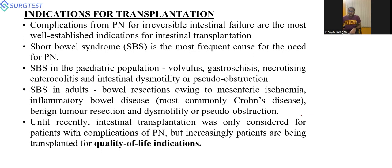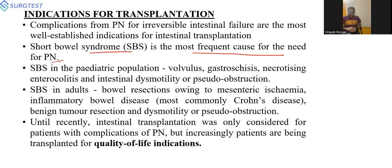Short bowel syndrome is the most frequent need for parenteral nutrition. Pediatric causes include gastroschisis, necrotizing enterocolitis, and intestinal dysmotility or pseudo-obstruction. Adult causes include bowel resection due to mesenteric ischemia, inflammatory bowel disease (mainly Crohn's, due to multiple segment involvement), benign tumor resection, desmoid disease, and dysmotility. Until recently, intestinal transplant was considered only for complications of parenteral nutrition, but increasingly patients are being targeted for quality-of-life improvement.